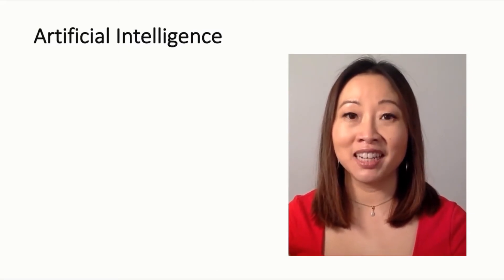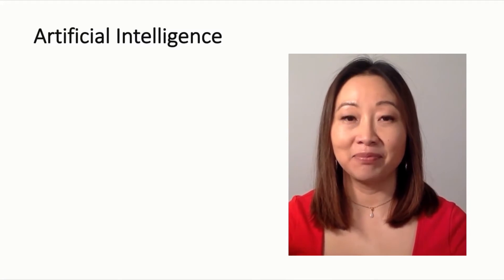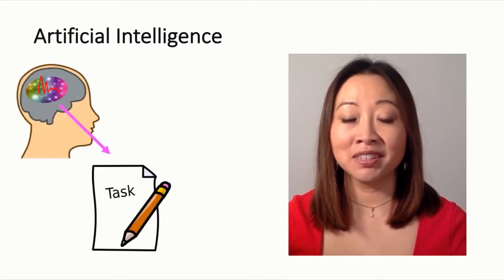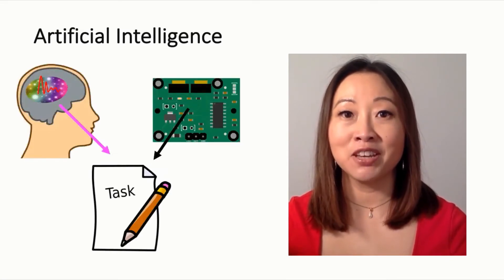Now that we've discussed human intelligence, let's talk about what is artificial intelligence. One definition of AI is that it's computers accomplishing tasks that mimic human intelligence.